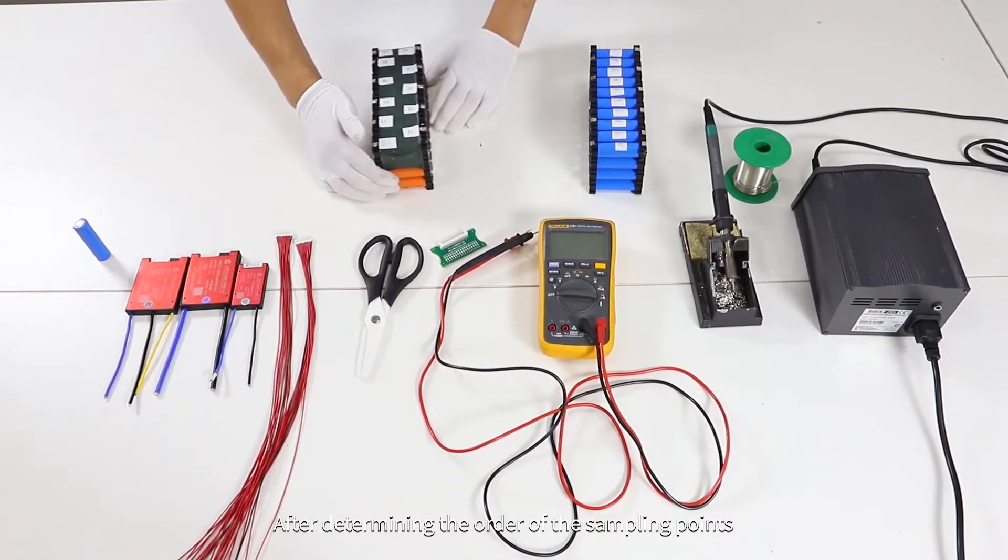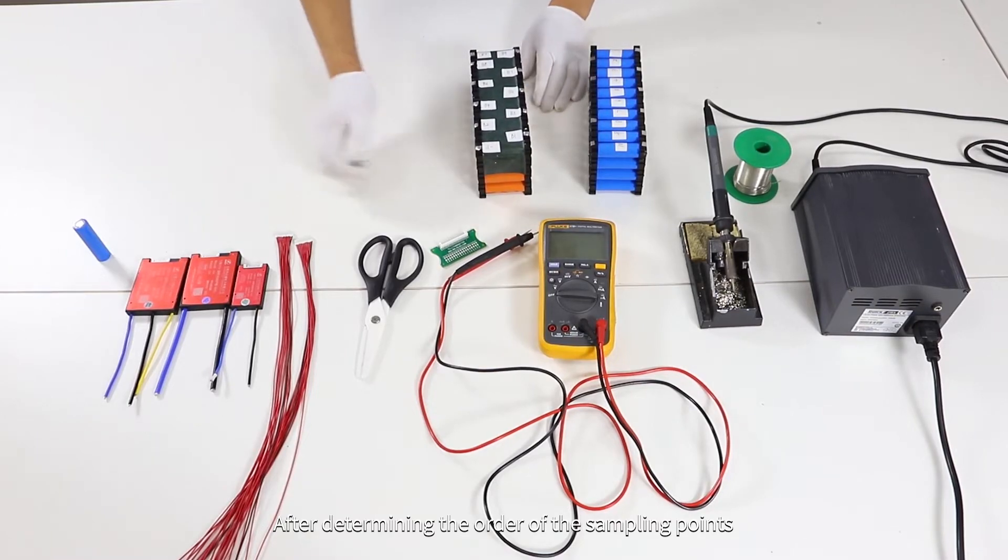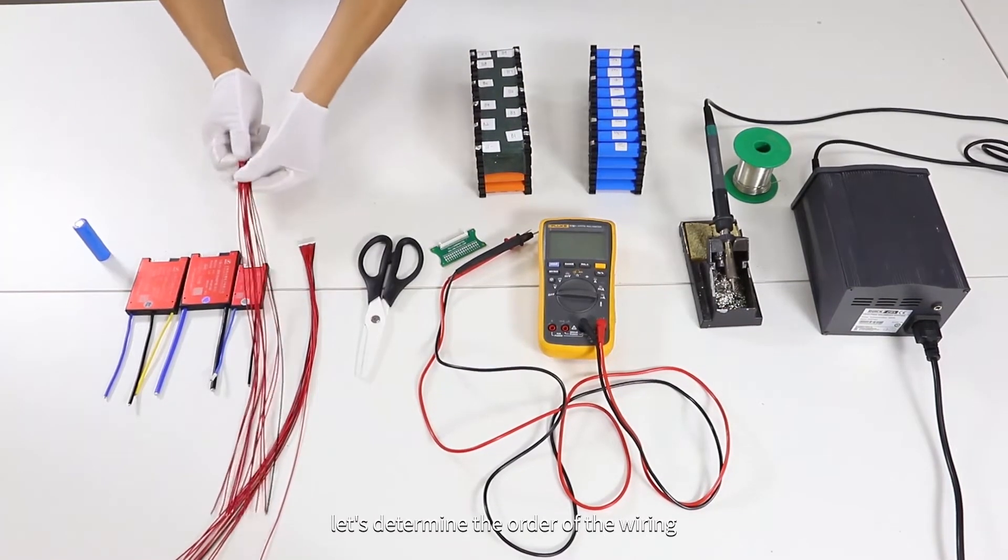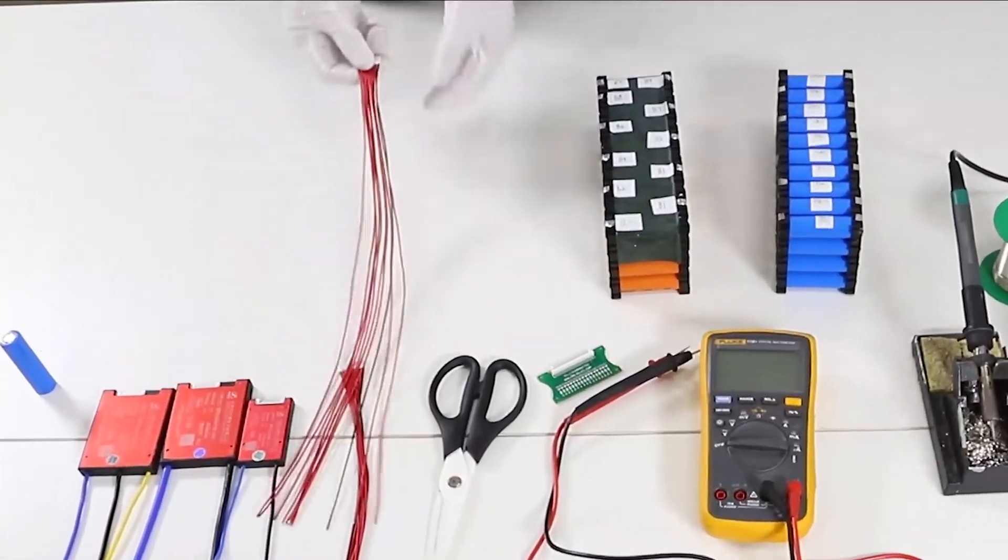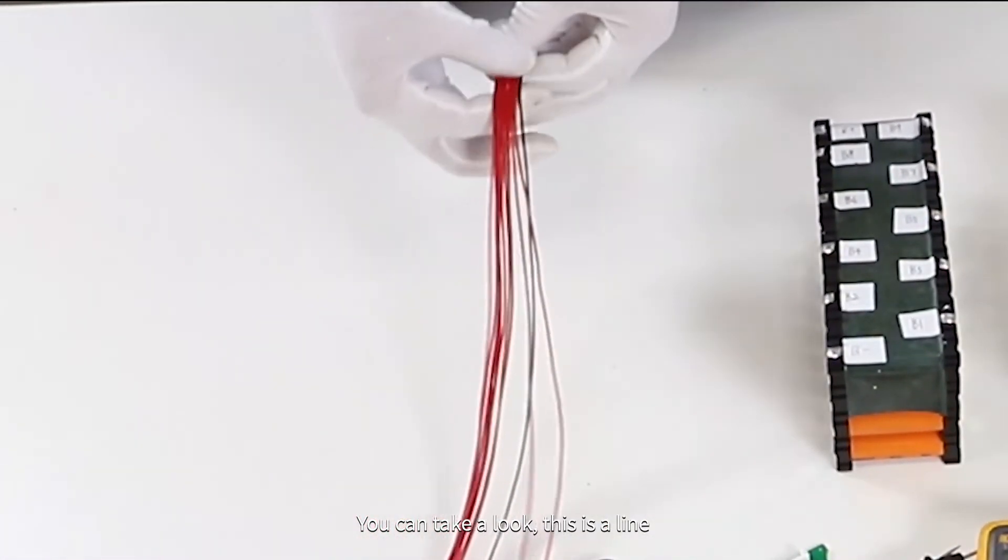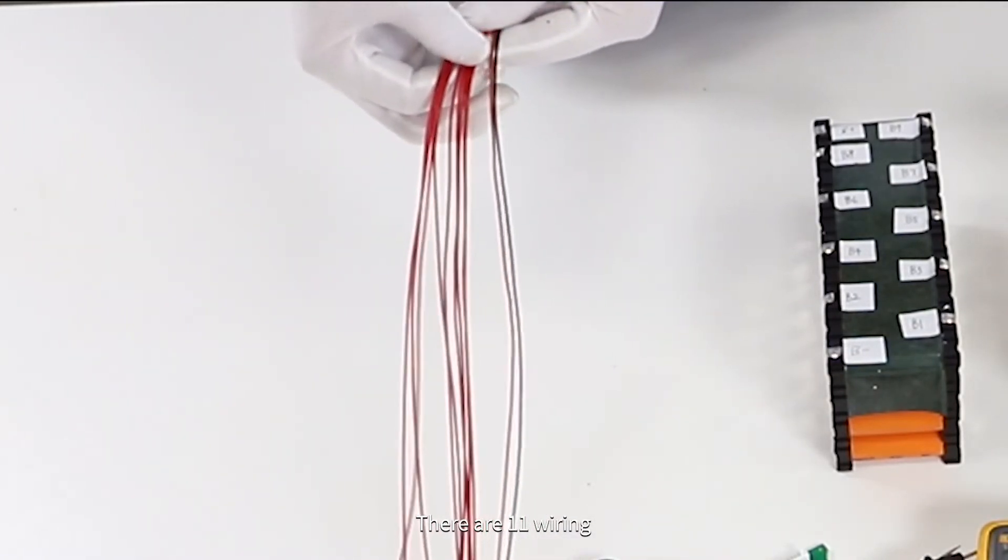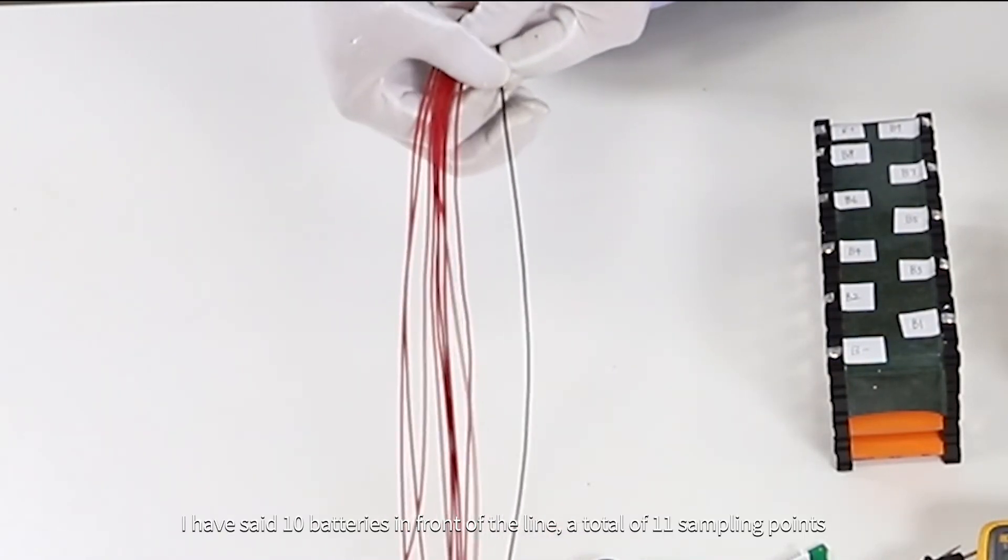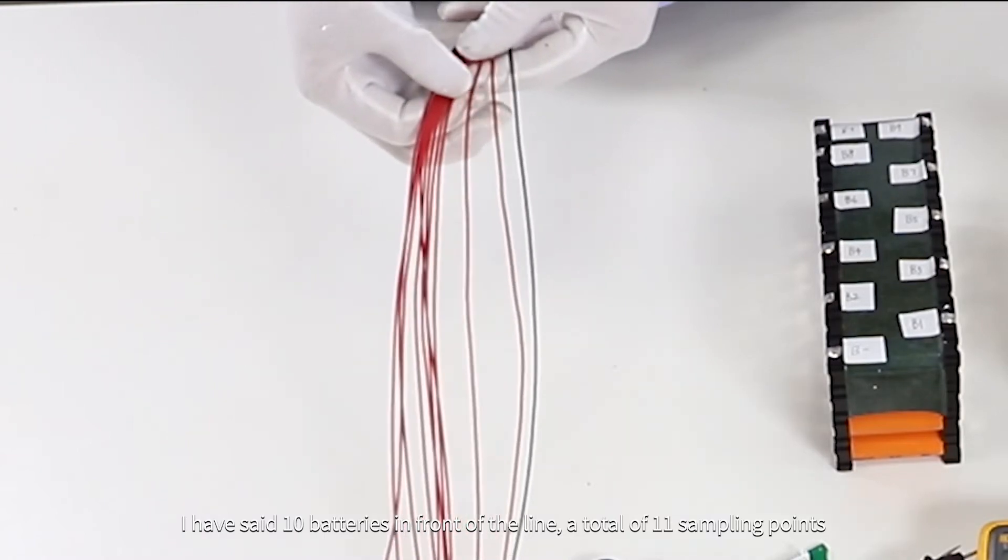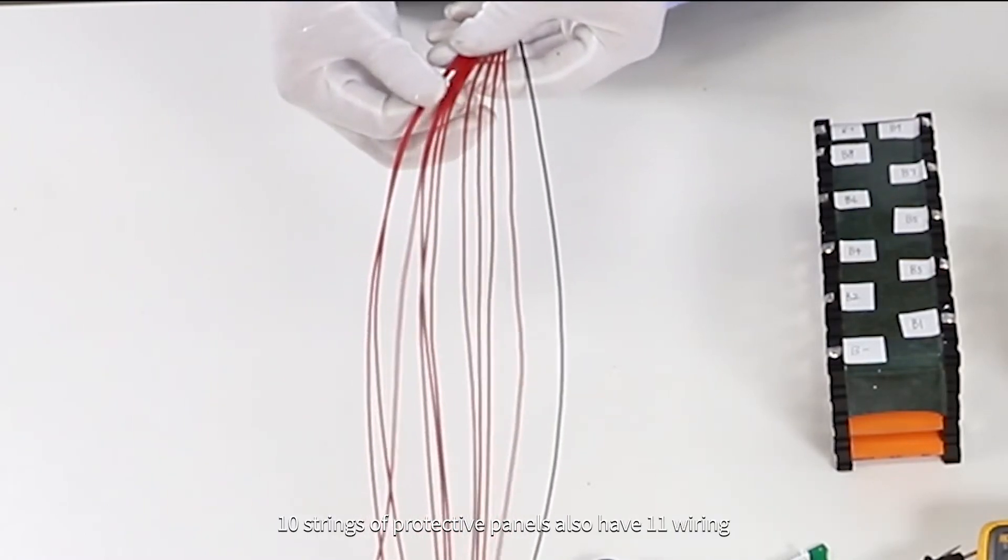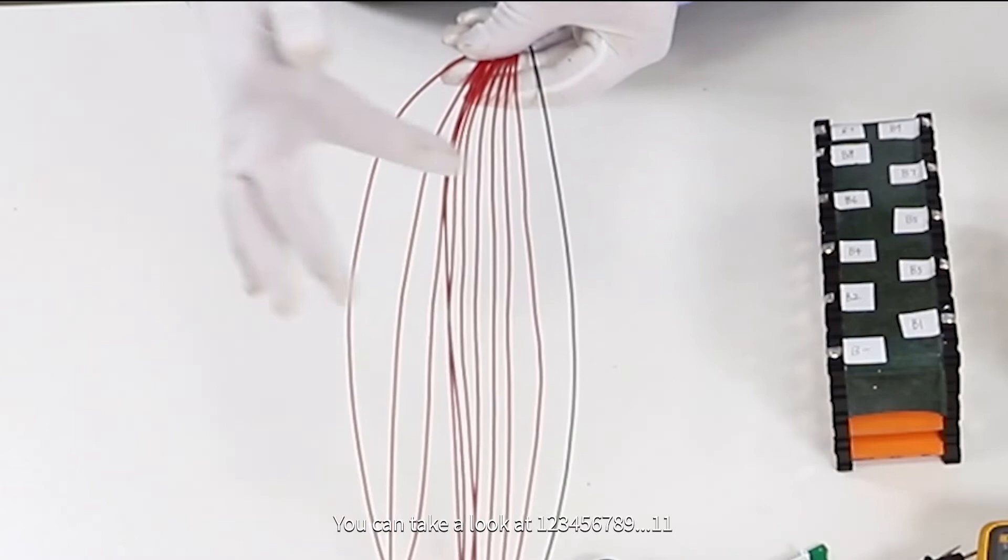After determining the order of the sampling points, let's determine the order of the wiring. You can take a look - this is a line. There are 11 wirings. I have said 10 batteries in front, a total of 11 sampling points. 10 strings of protective panels also have 11 wirings.